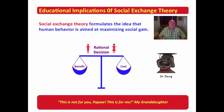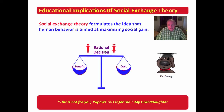Social exchange theory formulates the idea that human behavior is aimed at maximizing social gains. I'll remind you of this diagram where a male and female are making a rational decision in which they are weighing the benefits against the cost. If the benefits outweigh the cost, it's a good decision. If the cost outweigh the benefits, then it's probably not a good decision.